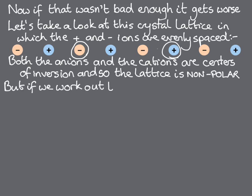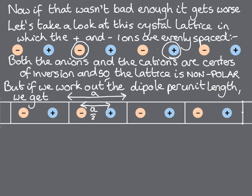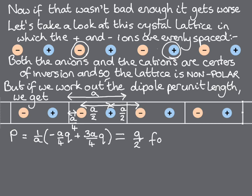But if we work out the dipole moment per unit length, recognizing that the spacing between all pairs of atoms is now a over 2, we get that P is equal to 1 over a times (minus a over 4 times q, plus 3a over 4 times q), which equals q over 2 for this unit cell.